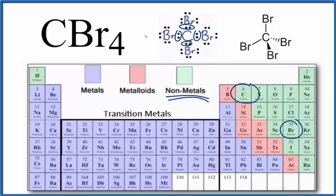This is Dr. B answering the question whether CBr4, carbon tetrabromide, is ionic or covalent. It is a covalent compound. Thanks for watching.